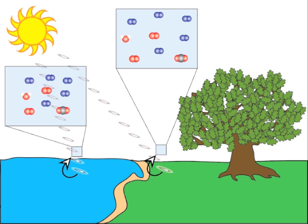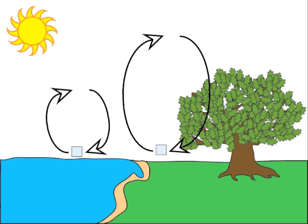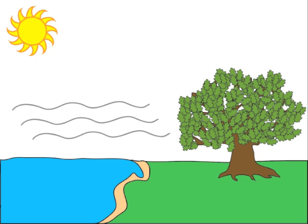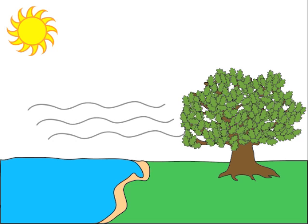Hot air is less dense and therefore rises, while cooler, denser air falls to take its place. This is known as convection and is what causes wind.